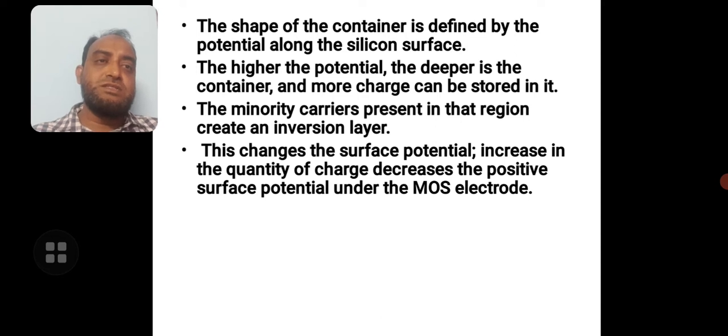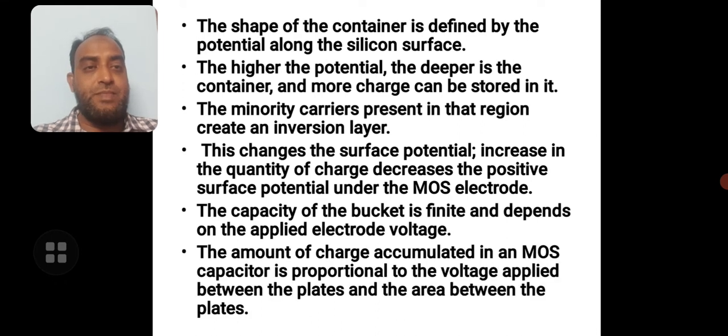The changes in the surface potential increases the quantity of charge and decreases the positive surface potential under MOS electrode. We should understand that the amount of charge accumulated in a MOS capacitor is proportional to the voltage applied between the plates and the area between the plates.